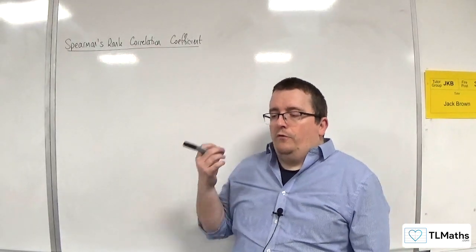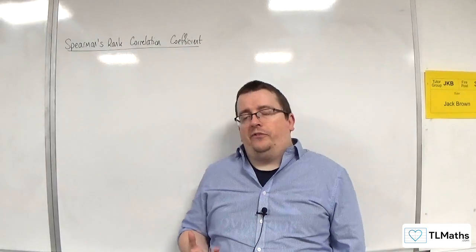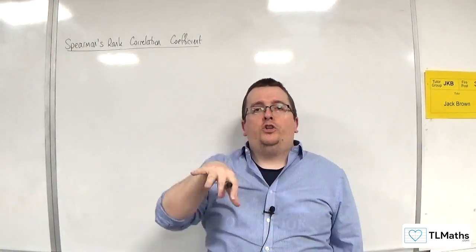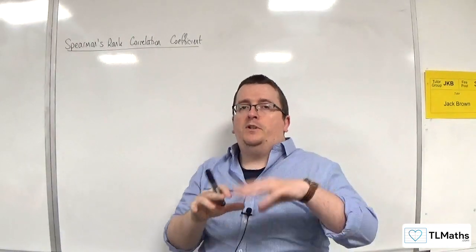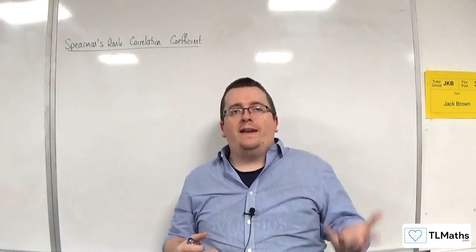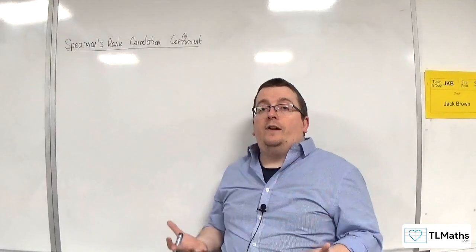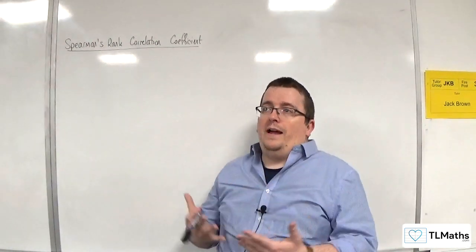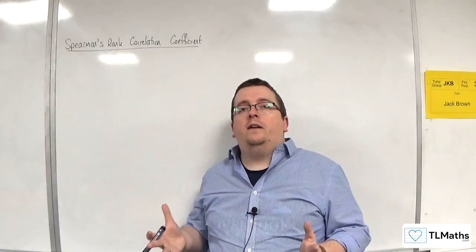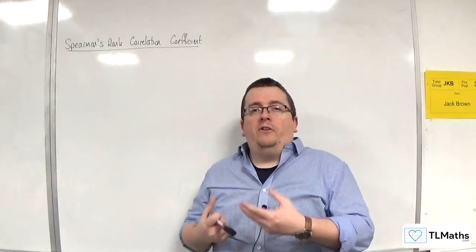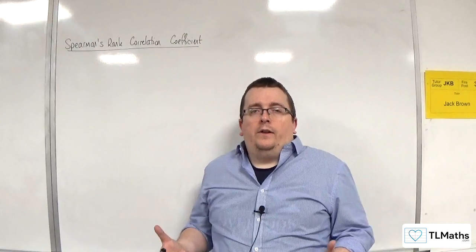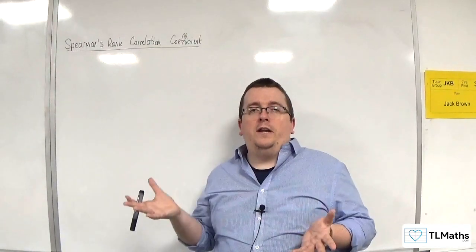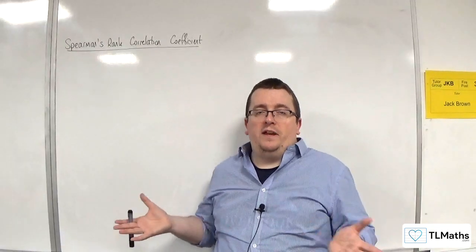First of all, the PMCC hypothesis test starts with let rho be the population correlation coefficient between the two variables, and you write that in context. However, with Spearman's rank correlation coefficient, we don't have an underlying population, so there is no rho, and we don't write an initial statement defining rho. There's no point, there is none.